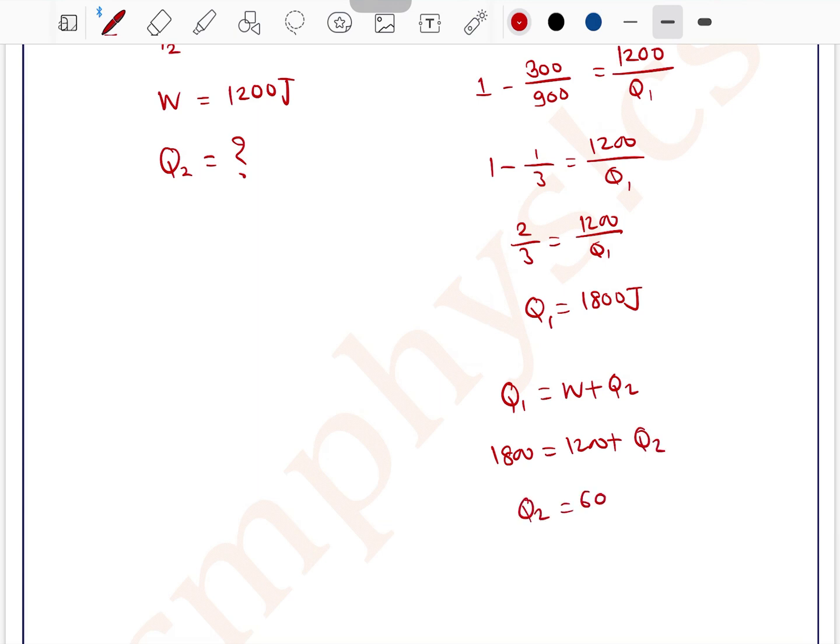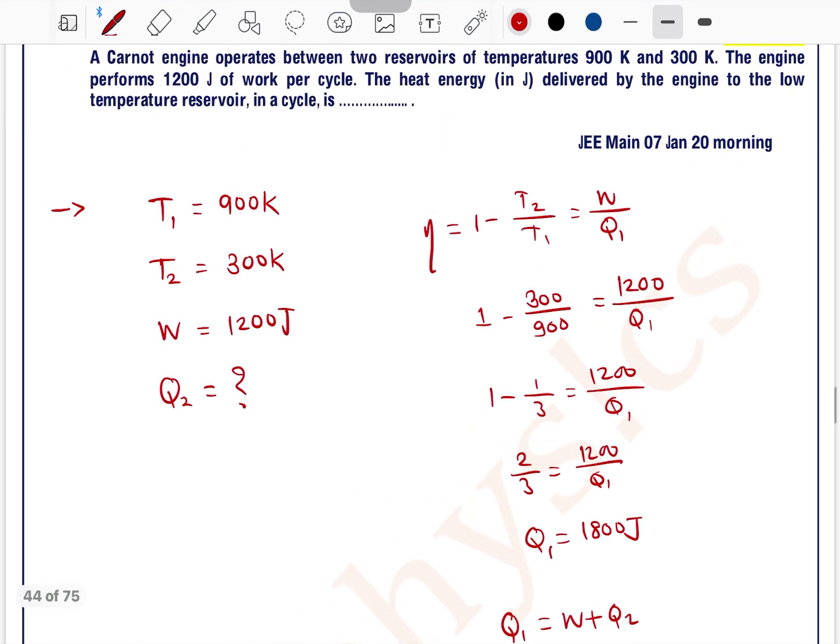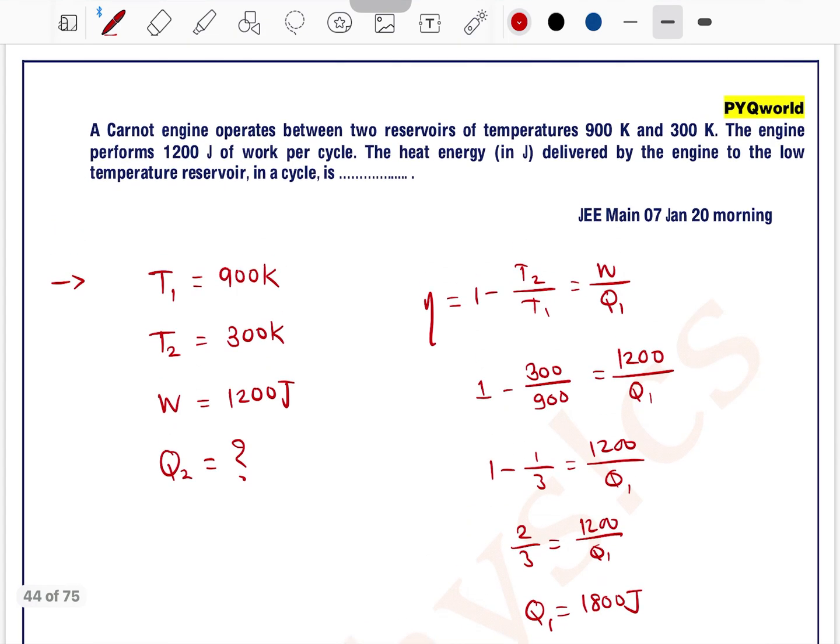Q2 is equal to 600 Joule, Q2 is equal to 600 Joule. It is integer type question, so answer is 600.